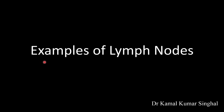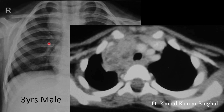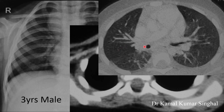Now let us look at the case scenarios of lymph nodes. This is a 3-year-old male child, and in this radiogram you see a lymph node in the right paratracheal region with non-homogenous opacity in the right middle zone. On the corresponding CT scan, you can identify the lymph node, and inside it these hypodensities indicate central necrosis, which takes the diagnosis away from malignancy and more towards tuberculosis. The trachea is relatively flattened on the right side due to compression from the lymph node, and the lung window also shows infiltrates on the right side.